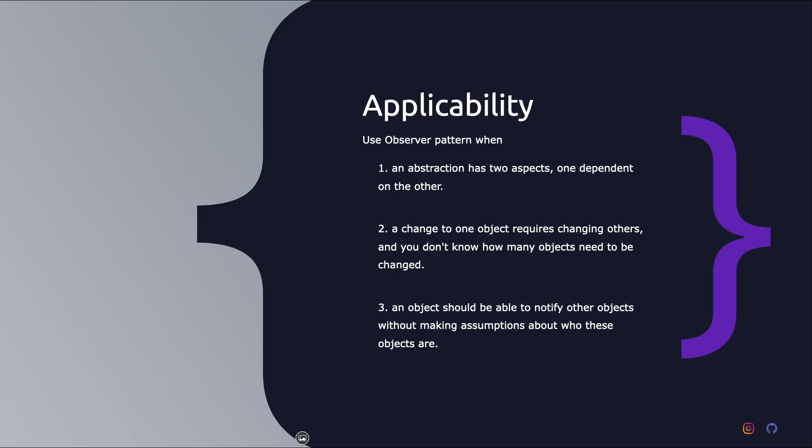Applicability of the observer pattern. Use the observer pattern when an abstraction has two aspects, one dependent on the other — encapsulating these aspects in separate objects lets you vary and reuse them independently. Use it when a change to one object requires changing others and you don't know how many objects need to be changed — in this case you don't know how many observers you have.